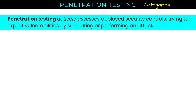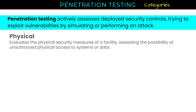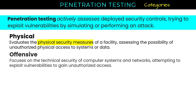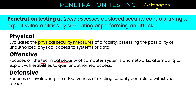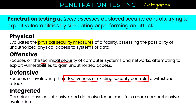Moving on to penetration testing — starting with the categories. Penetration testing is a process that actively assesses deployed security controls by trying to exploit vulnerabilities through simulating or performing an attack. A physical penetration test evaluates the physical security measures of a facility. Offensive testing focuses on the technical security of computer systems and networks. Defensive testing focuses on evaluating the effectiveness of existing security controls. Integrated testing combines physical, offensive, and defensive techniques for a more comprehensive evaluation.